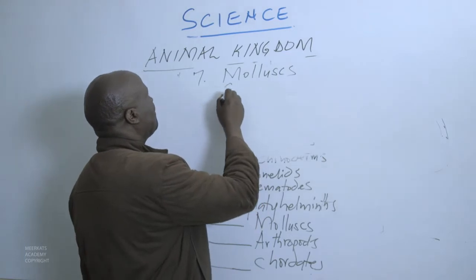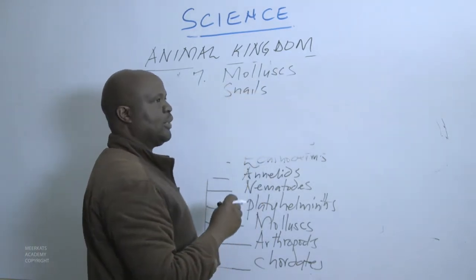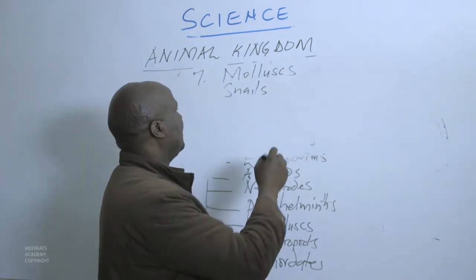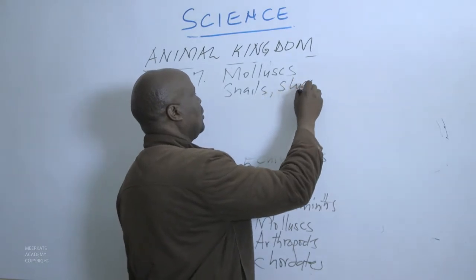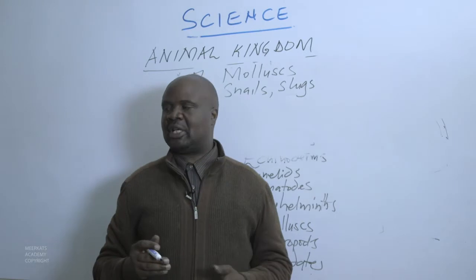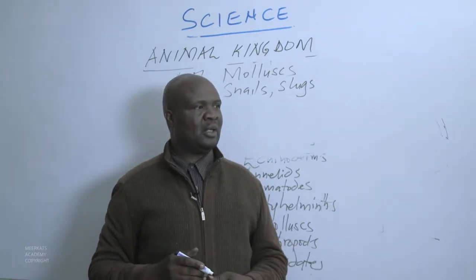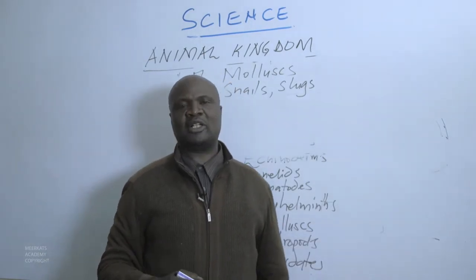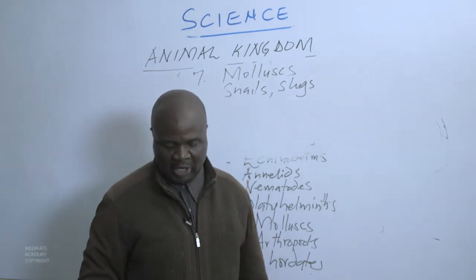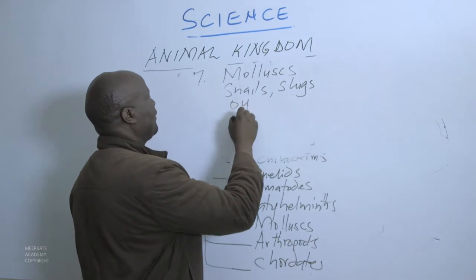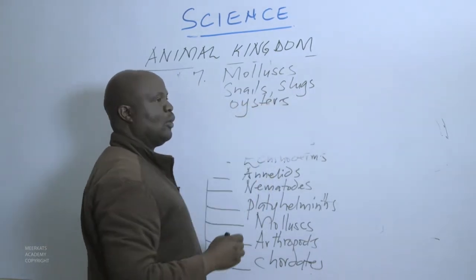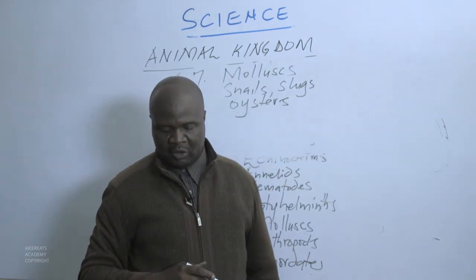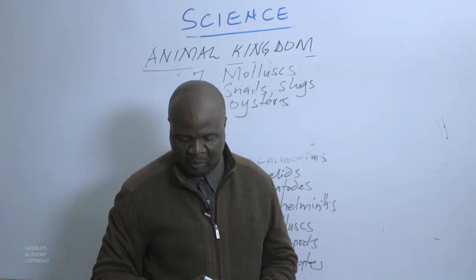Animals in the Mollusks phylum include snails, slugs, and oysters. Snails are those which have their shells, and those without shells are called slugs. Oysters are also organisms present within this grouping.